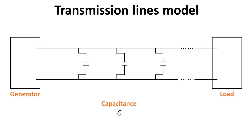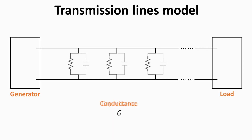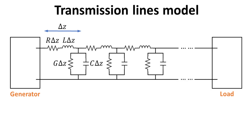Third, any pair of electrical conductors are capacitively coupled, and this capacitance increases when their separation is reduced. Finally, there is finite current leakage between conductors, characterized by a finite electrical conductance. Putting everything together, we have the following circuit model for the pair of wires, known as the transmission line model.